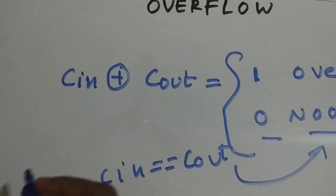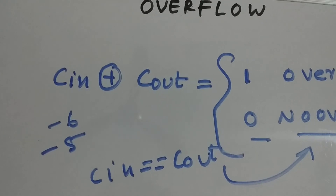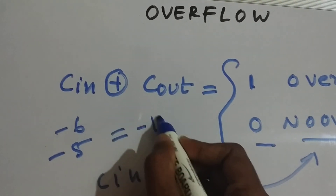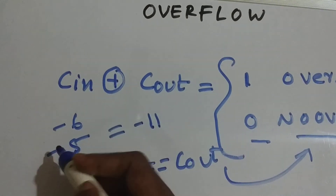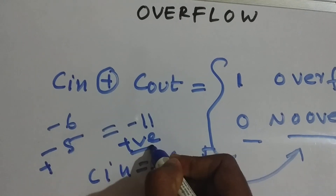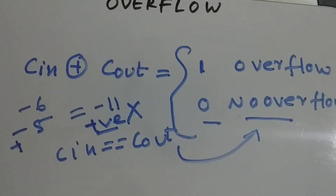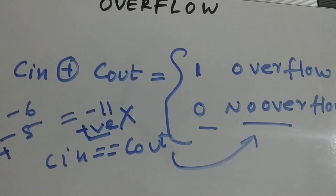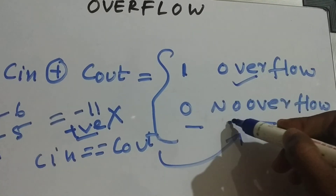Overflow will cause a lot of trouble and give you unwanted results. For example, if we add minus six and minus five in four-bit two's complement, we should get minus eleven, but due to discarding the carry we will get a positive number instead — and that's wrong. So use C_in and C_out: one means overflow, zero means not overflow.